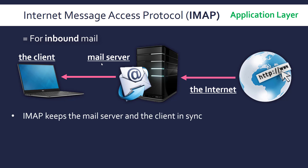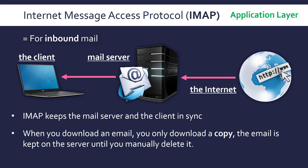The way IMAP works is it keeps the client and the server in sync. This isn't necessarily the case with other protocols — there's an alternative which essentially deletes your email from the server once you download it. This doesn't happen with IMAP. Instead, when you download an email, a copy is kept on the mail server. So they're kept linked and in sync.